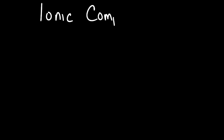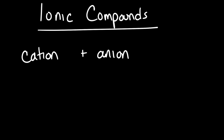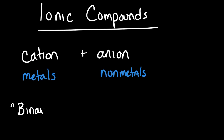Let's start with a quick recap on ionic compounds. Ionic compounds are formed between a cation, or positively charged ion, and an anion. Metals tend to form cations and nonmetals tend to form anions. We use this information about metals and nonmetals to decide how to name a compound.